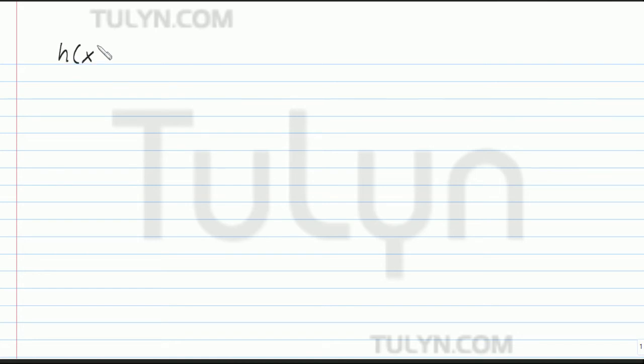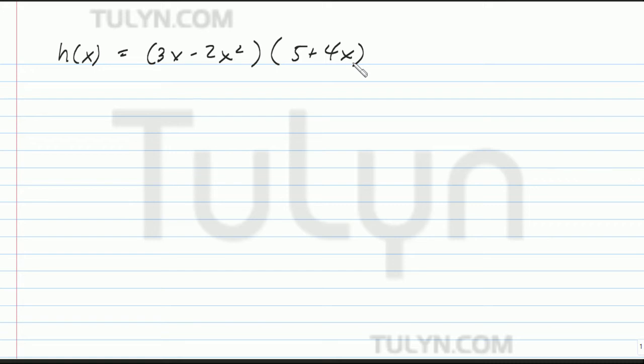Find the derivative of h of x equals (3x minus 2x squared) times (5 plus 4x). There are two ways to find the derivative of this multiplication problem. You can FOIL to find the trinomial and then find the derivative of that trinomial, or option 2, use the product rule. I'm going to show you how to do option 2, the product rule.